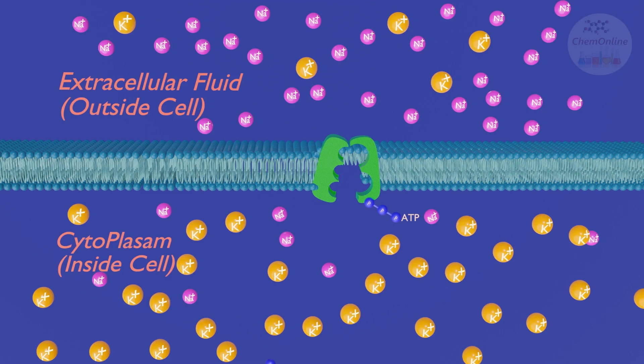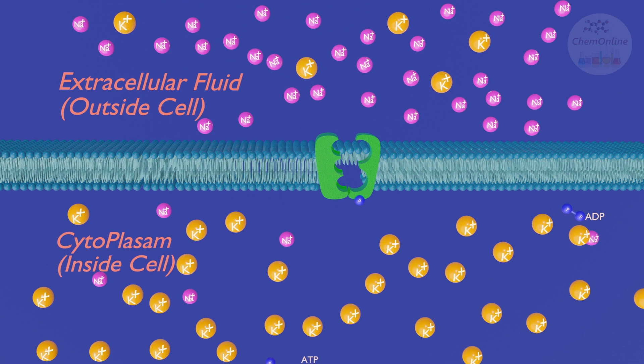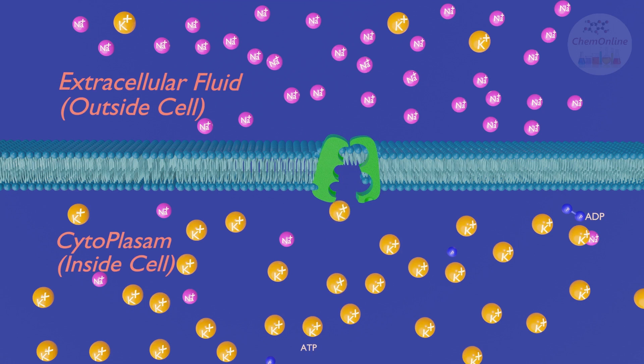Now let's see an animation on the transport process of sodium and potassium ions across the cell membrane. Three Na+ ions bind with the enzyme inside the cell, powered by ATP. Binding of the three Na+ ions and the hydrolysis of ATP causes the enzyme to change its shape, pumping three Na+ ions out of the cell. At that point two K+ ions from outside the cell bind to the enzyme, a conformational change occurs, and the K+ ions are transported into the cell. This process then repeats.